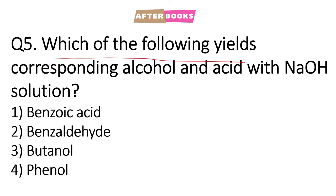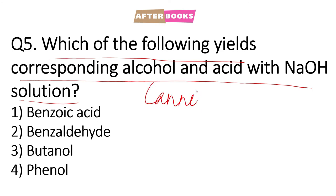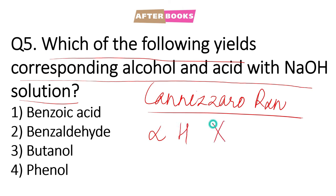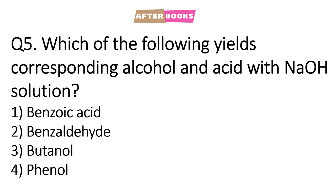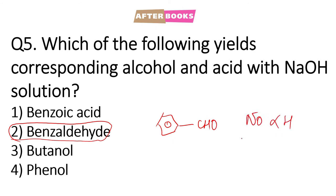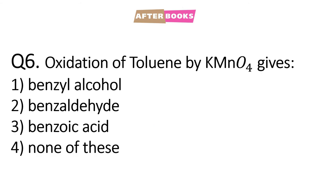Question number 5: which of the following yields corresponding alcohol and acid with NaOH solution? This is a name reaction known as Cannizzaro reaction. Cannizzaro reaction mein hume chahiye ke alpha hydrogen nahi hona chahiye substrate ke paas, aur products mein bante hai acid and alcohol in the presence of NaOH. This is the reaction for aldehydes. So the correct option is option number 2, which is benzaldehyde, C6H5CHO — is ke paas koi bhi alpha hydrogen present nahi hai, isi liye it gives Cannizzaro reaction.